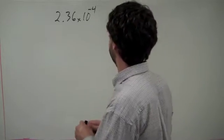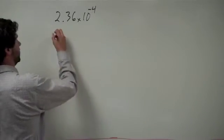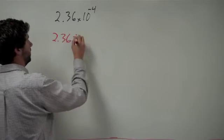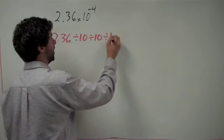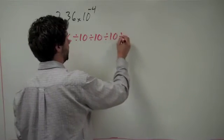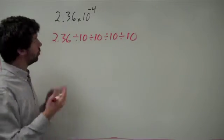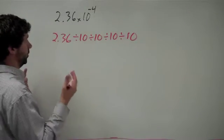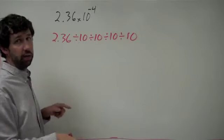What this really means is 2.36 divided by 10, divided by 10, divided by 10, divided by 10. You could check that on a calculator and literally go through and take this and divide by 10.